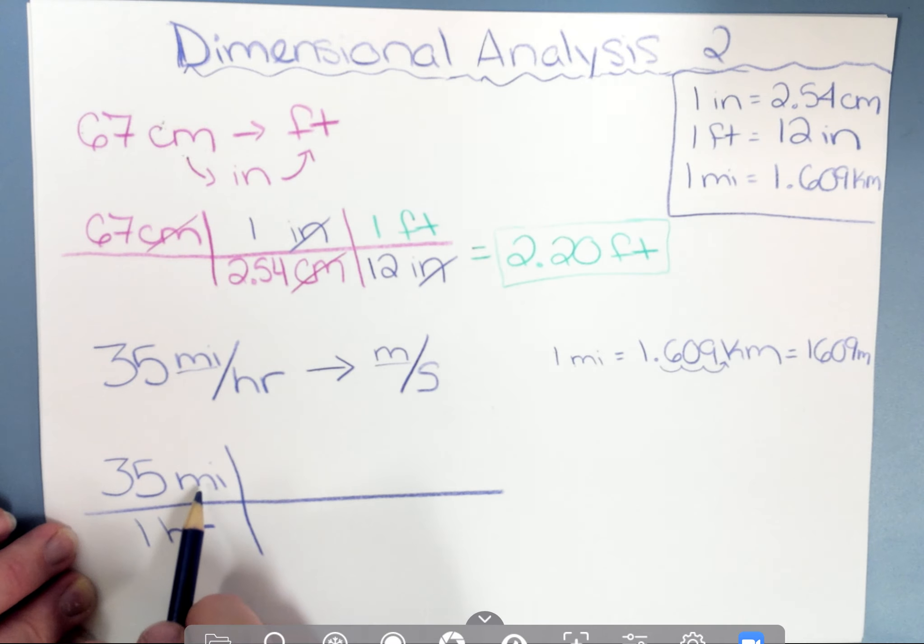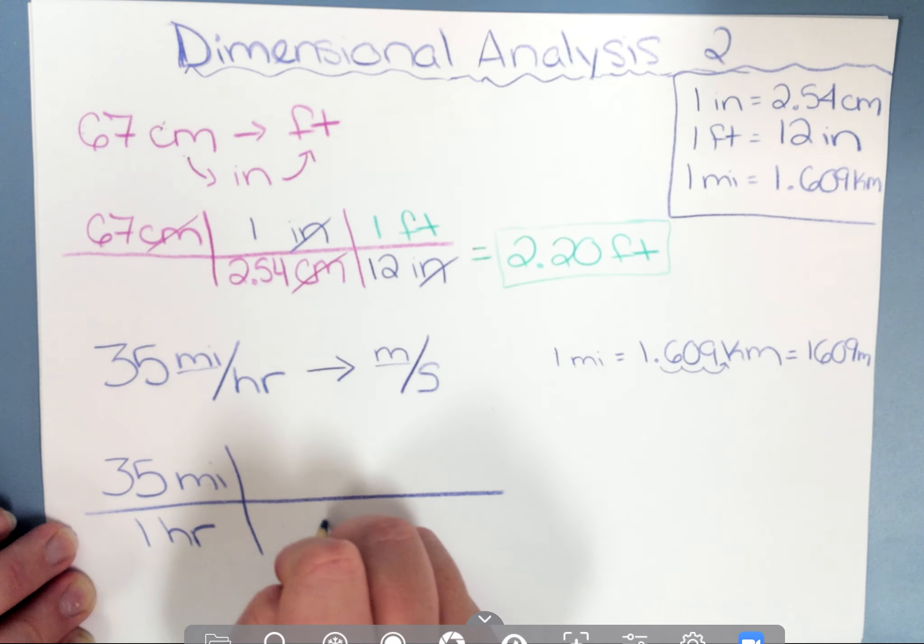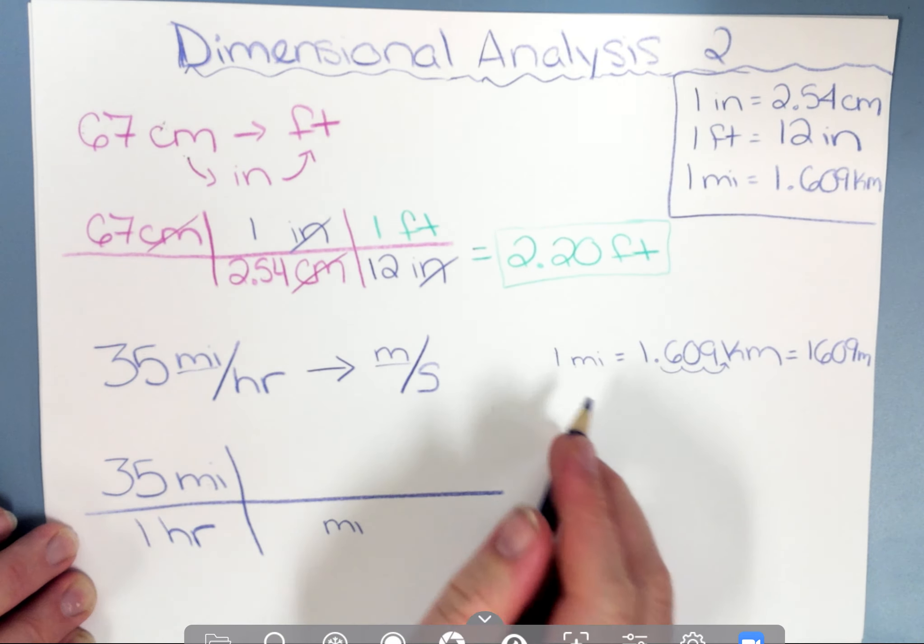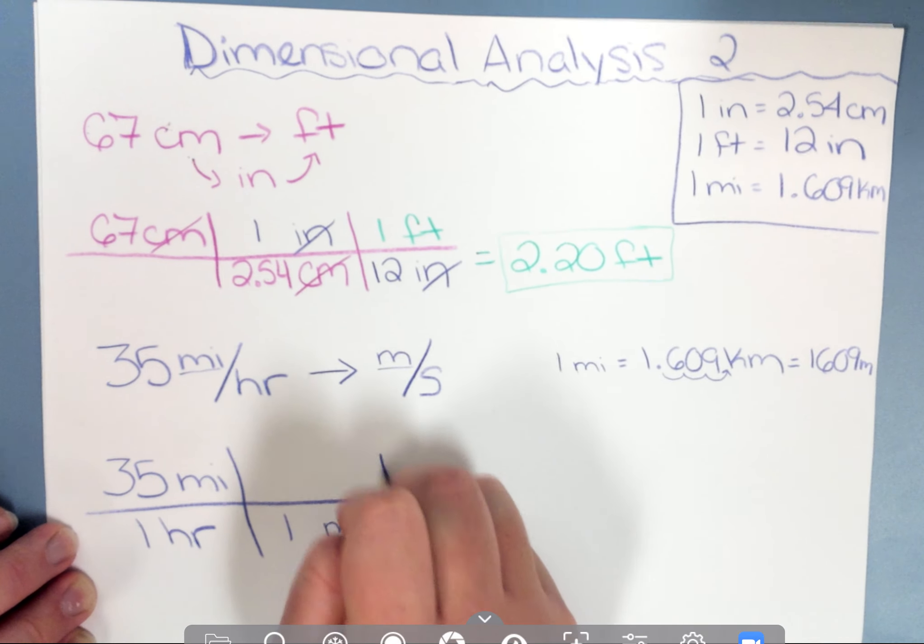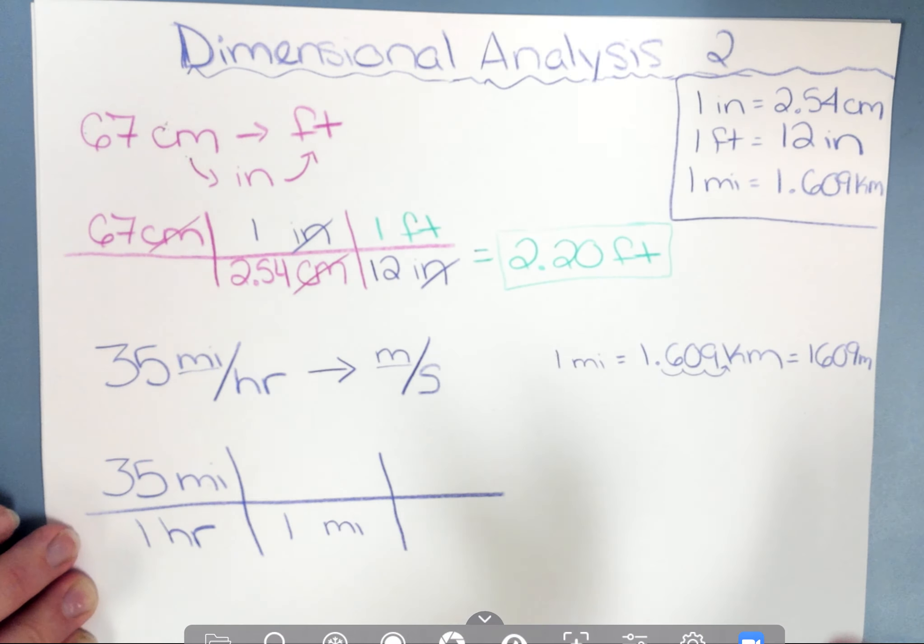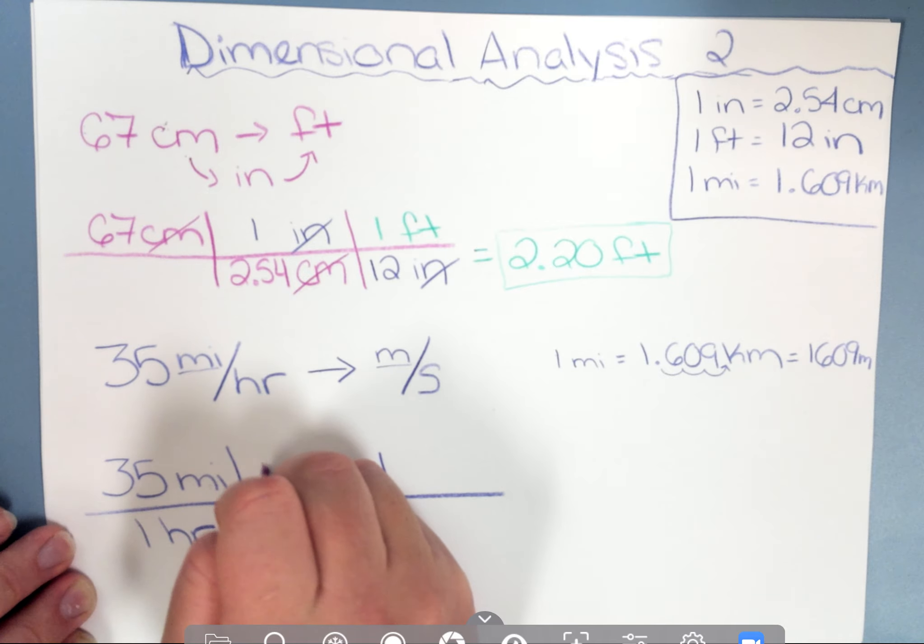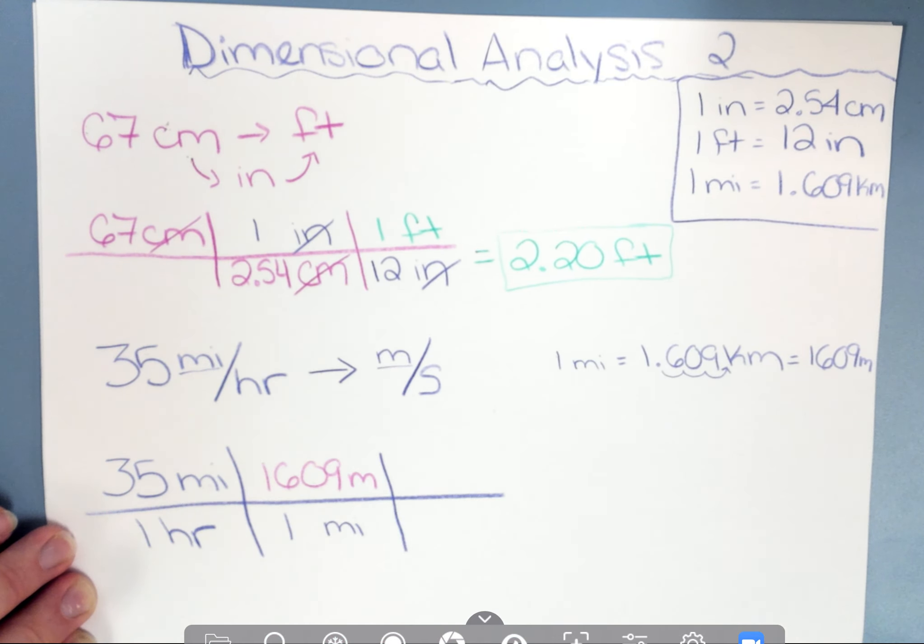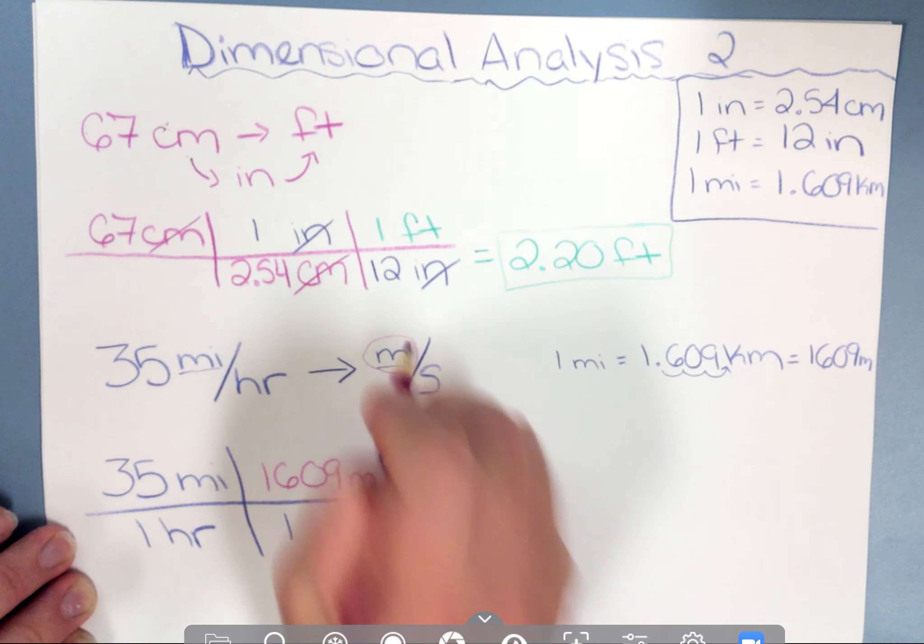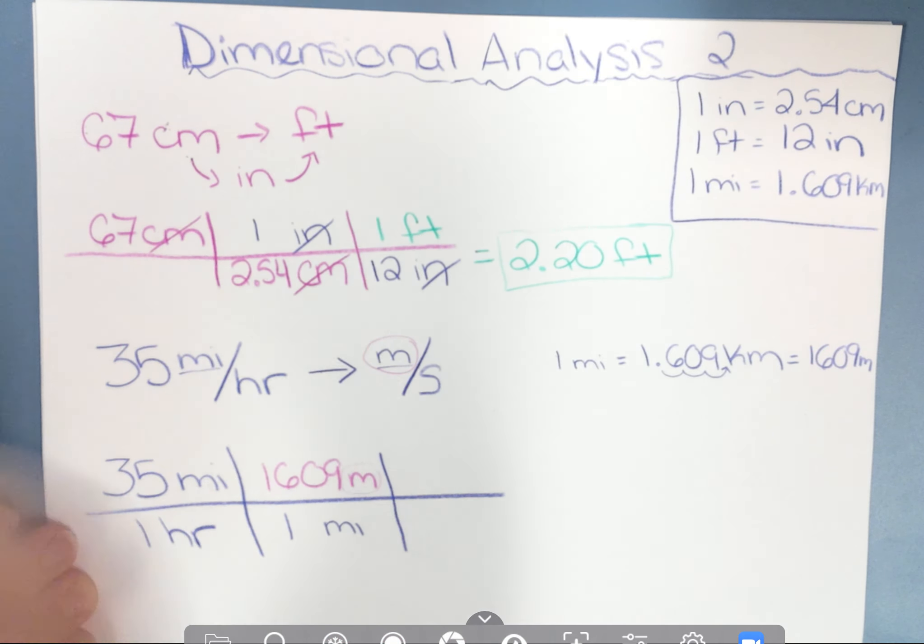Same process before. If I have miles up here, I'm going to put miles in the bottom, and one mile is equal to 1,609 meters. So I have my meters unit right here, and my miles units have now canceled.